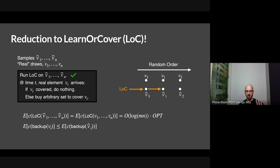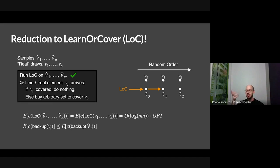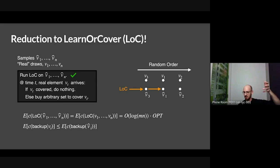To clarify: we have these samples offline, we shuffle them and run Learn-or-Cover on those samples. Then the real game starts and we see the real draws. Basically most things will already be covered; for anybody uncovered, just do anything arbitrary. The ordering of the real draws doesn't even matter here, because we see the real draws after we've run Learn-or-Cover to completion. We charge the backups to the backups of Learn-or-Cover, which we know we can pay for.